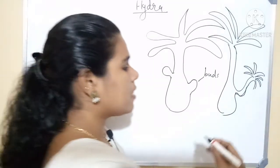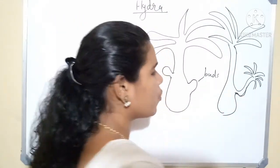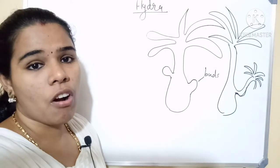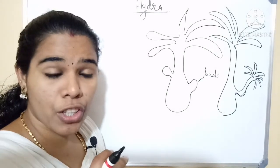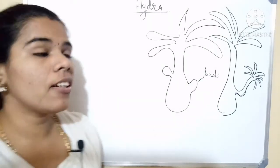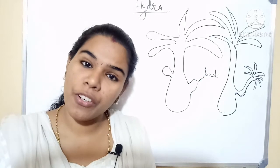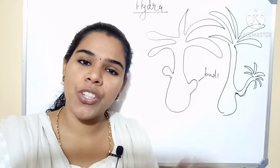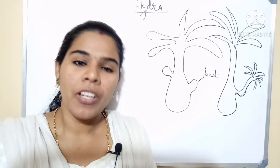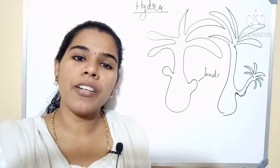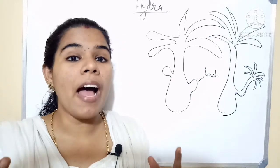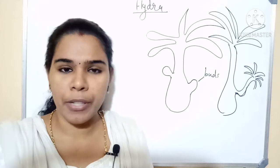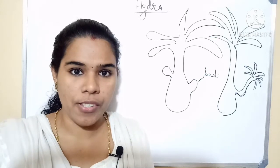These bulges are called buds. The buds help to develop a new individual. This kind of reproduction is called asexual reproduction. Why is it called asexual reproduction? What is the difference between sexual and asexual reproduction? In sexual reproduction, two parents are involved in that particular process.